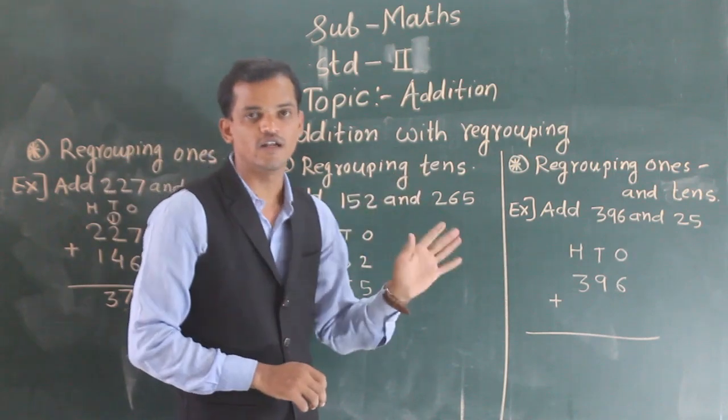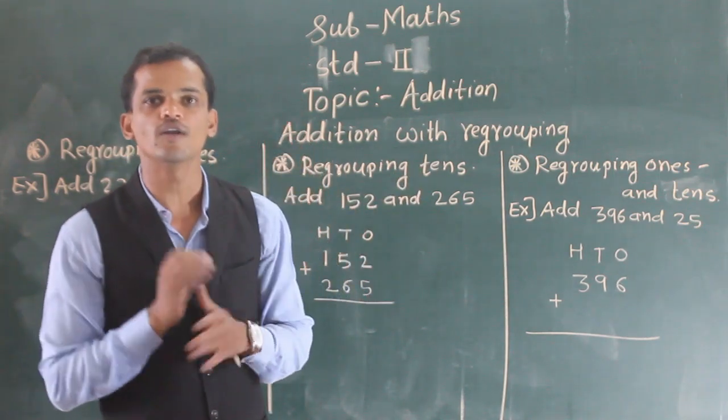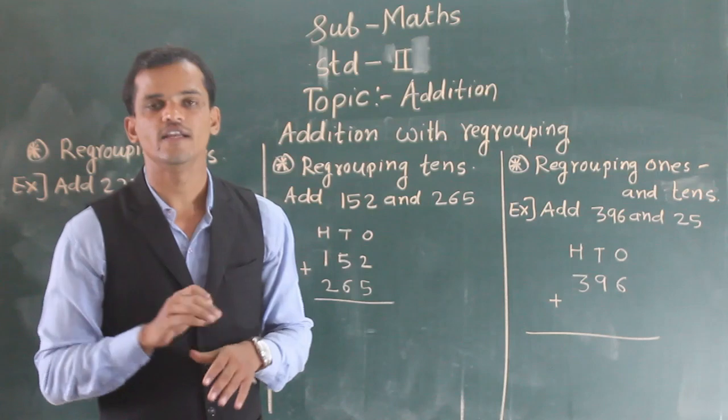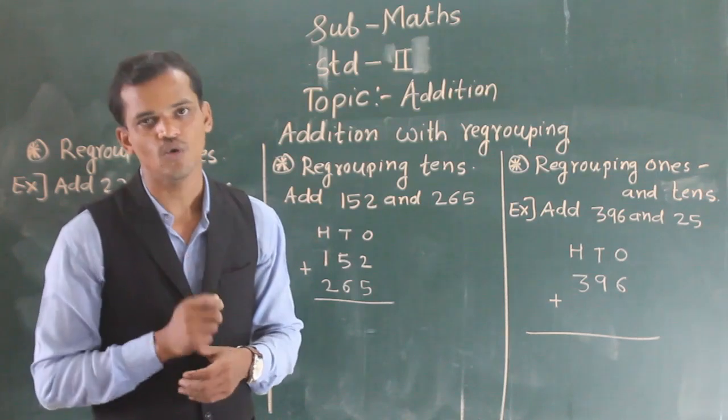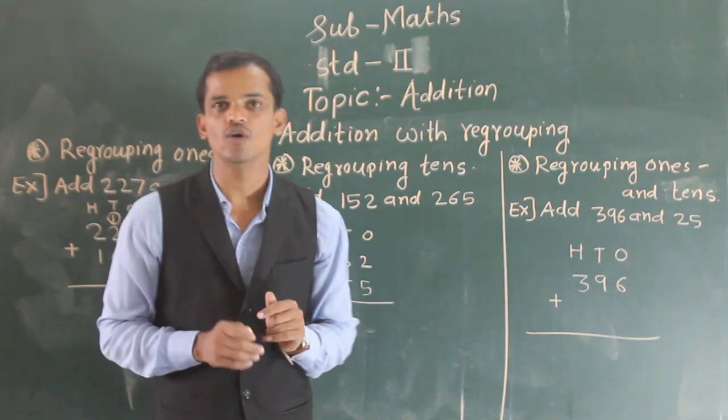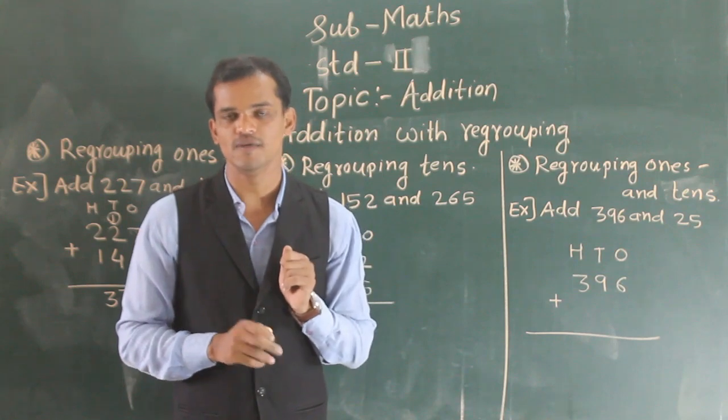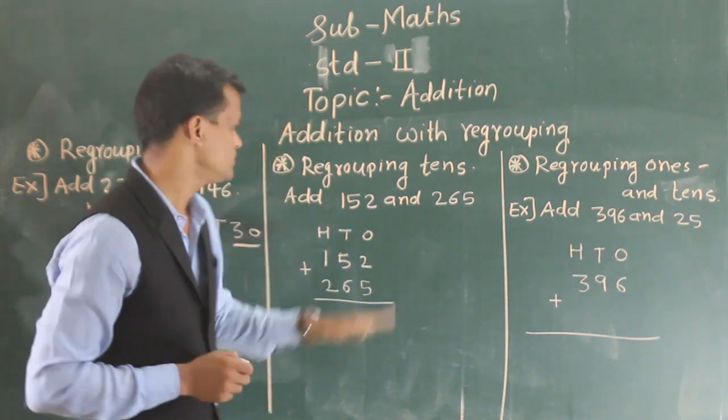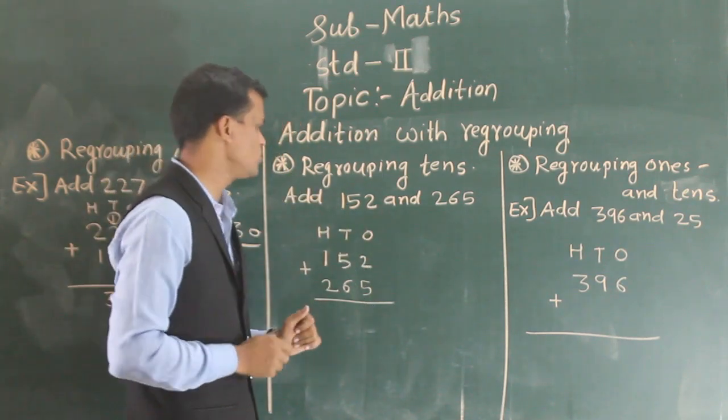Then next, regroup the tens. We also said, if you have more than 9 tens, then we regroup that tens into 100. We know 10 tens means 100.